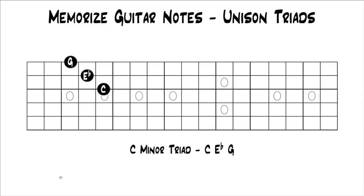Once you do it with the major triads, you can do it with the minor triads — exact same thing. Then you can do diminished triads, augmented triads. And once you've done it in C, you can move to another key — G, A, B, whatever.